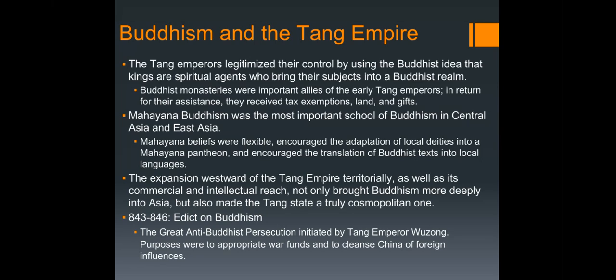Mahayana Buddhism was the most important school in central and east Asia. Its beliefs were incredibly flexible, allowing people throughout China to adopt it and incorporate local deities. It also encouraged the translation of Buddhist texts into local languages — including countless local Chinese dialects — which allowed Buddhism to spread very quickly.